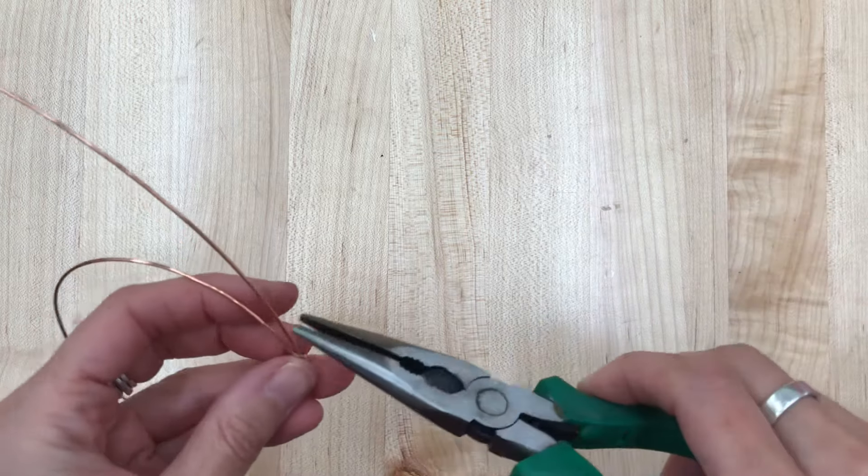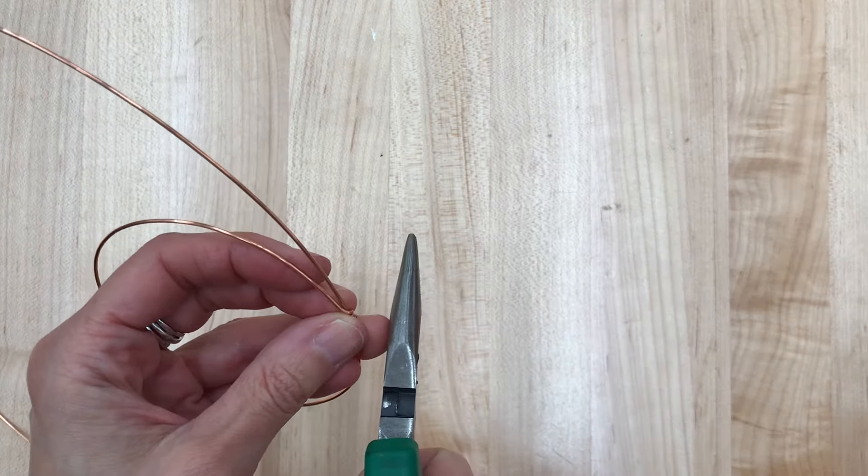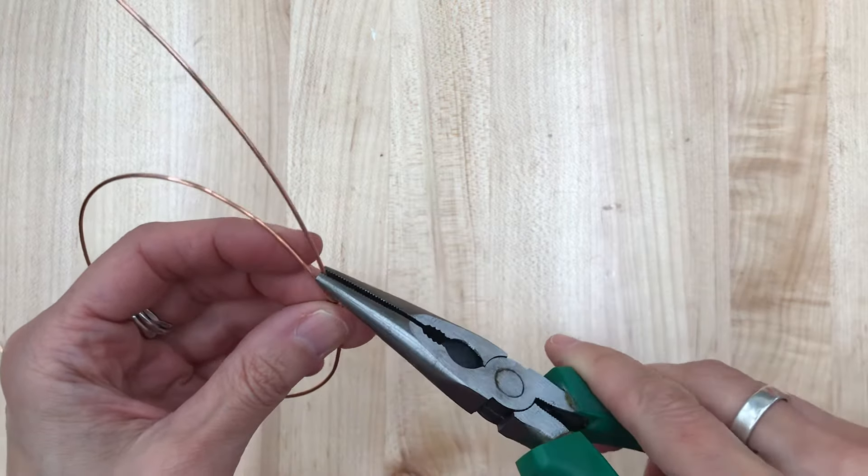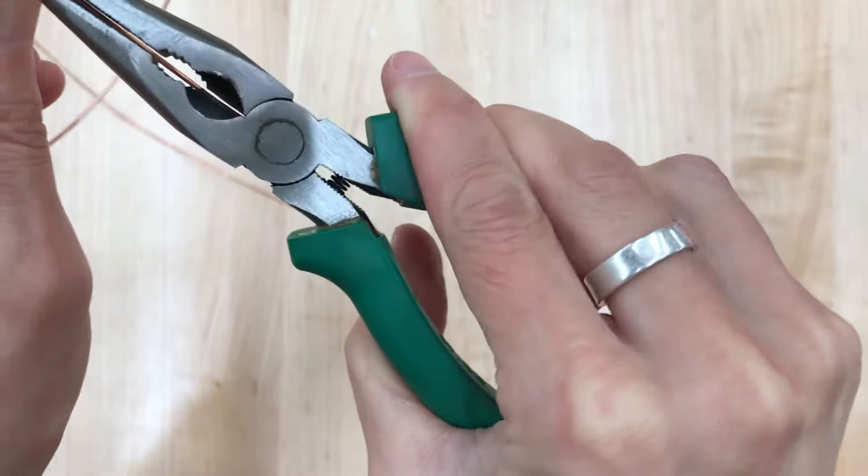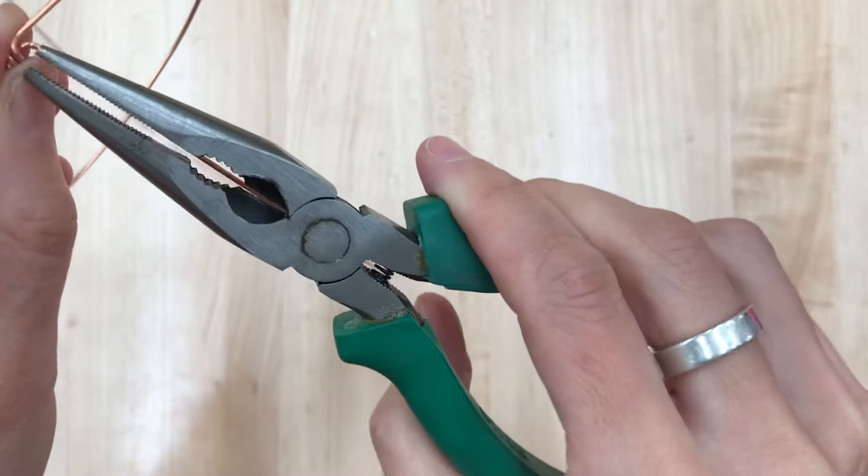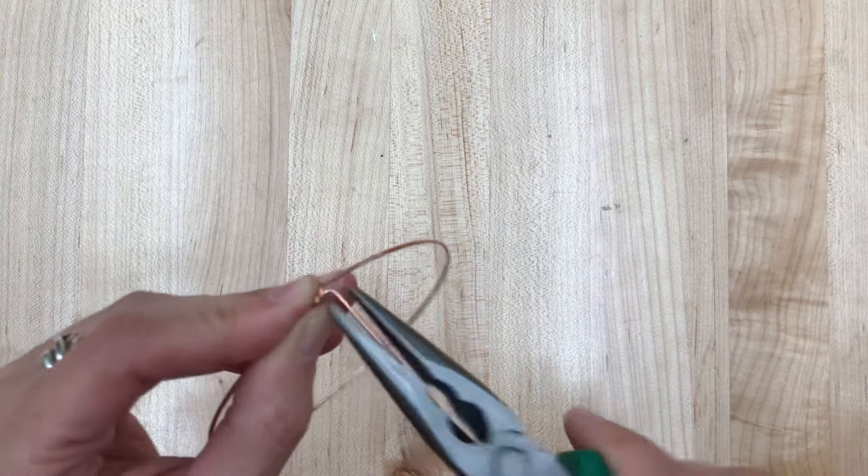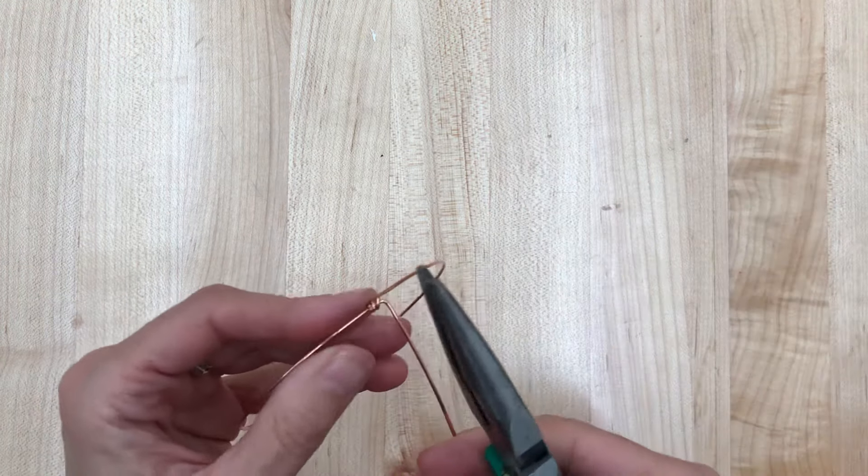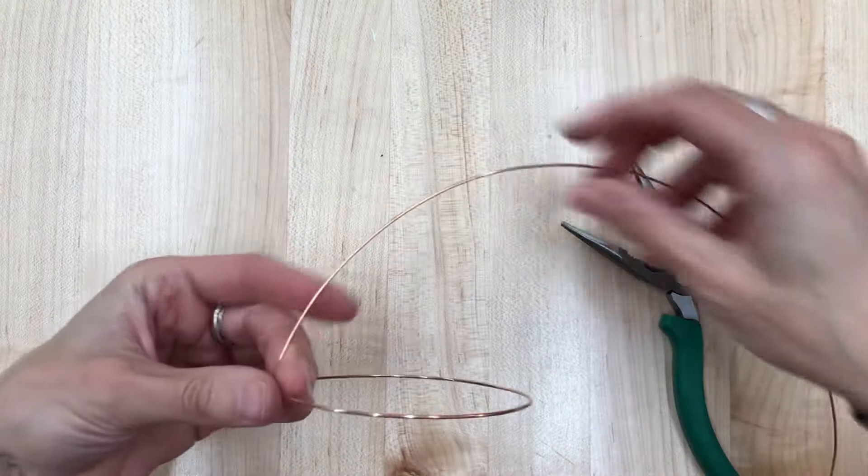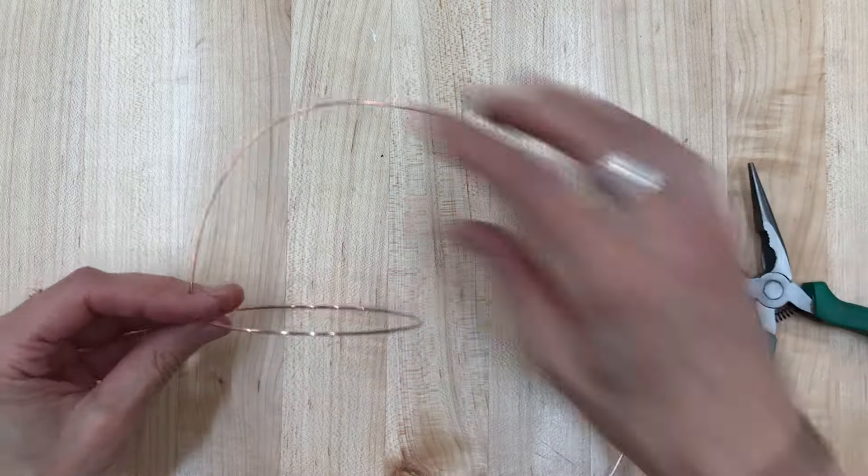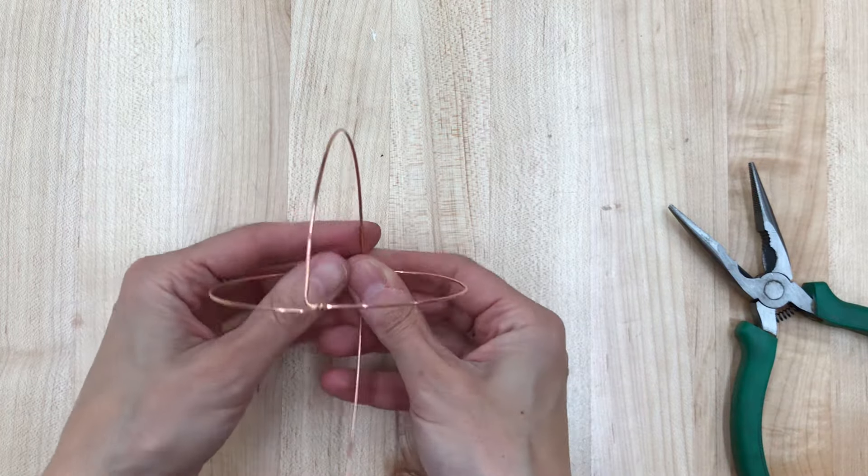Your next step is going to be grabbing the long end of the wire and pulling it out about 90 degrees. And using the pliers, you can get a nice sharp corner. Okay, so I'm ready for my next join.